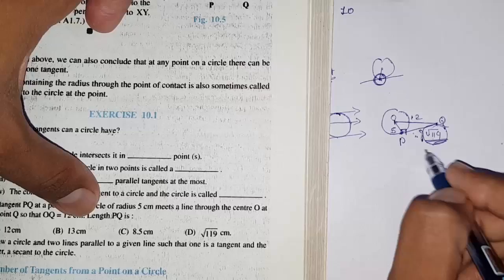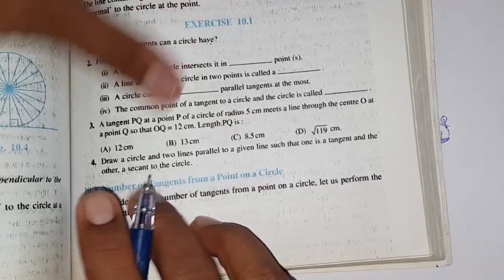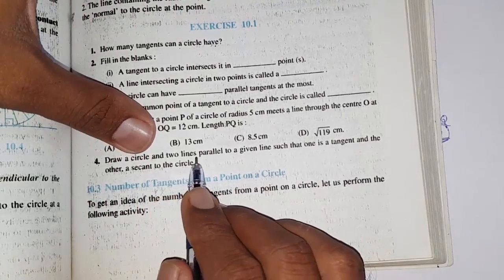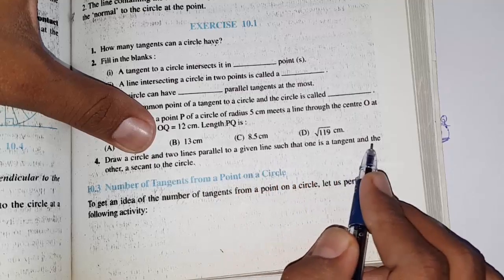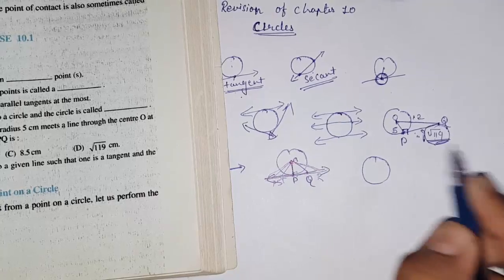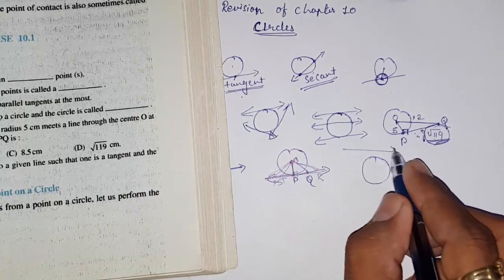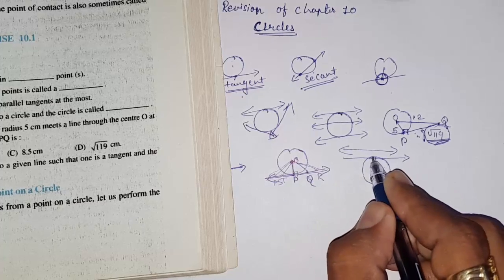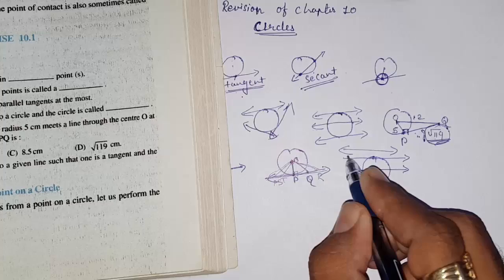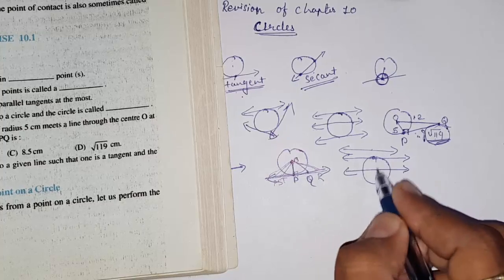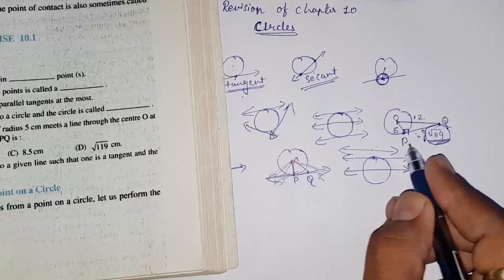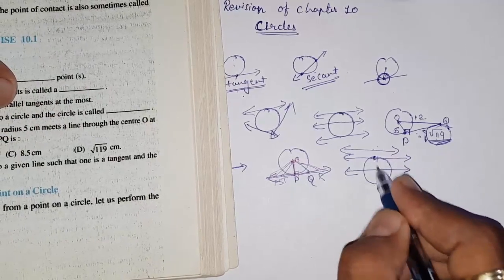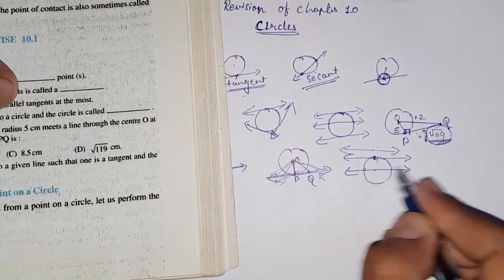Since the hypotenuse is 12 and one side is 5, by Pythagoras you will get √119. Next: draw a circle and two lines parallel to a given line — one as a tangent and the other as a secant to the circle. Draw a circle and a reference line, then draw one parallel line touching the circle (tangent) and another cutting through it (secant).